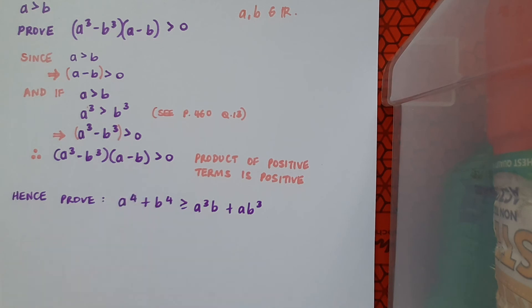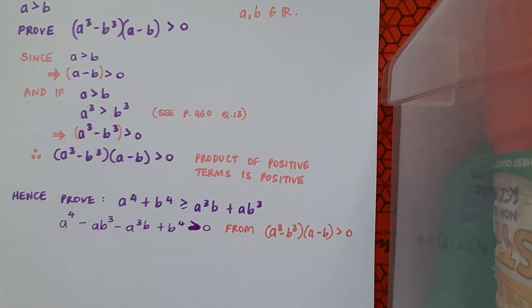So multiplying out there, I get that a to the 4 minus a b cubed minus a cubed b plus b to the 4 is greater than zero. And I'm just going to reference where I'm getting that from. I'm getting that from this line here. And now it's simply really a question of just rearranging this statement. So I can say that implies that a to the 4 plus b to the 4 is greater than a cubed b plus a b cubed.